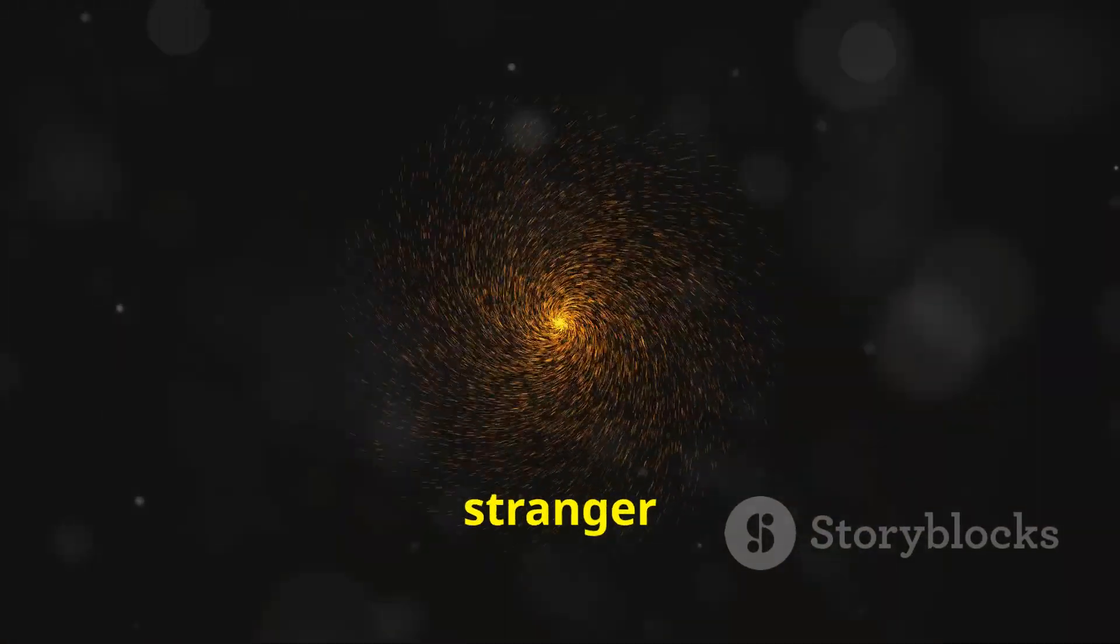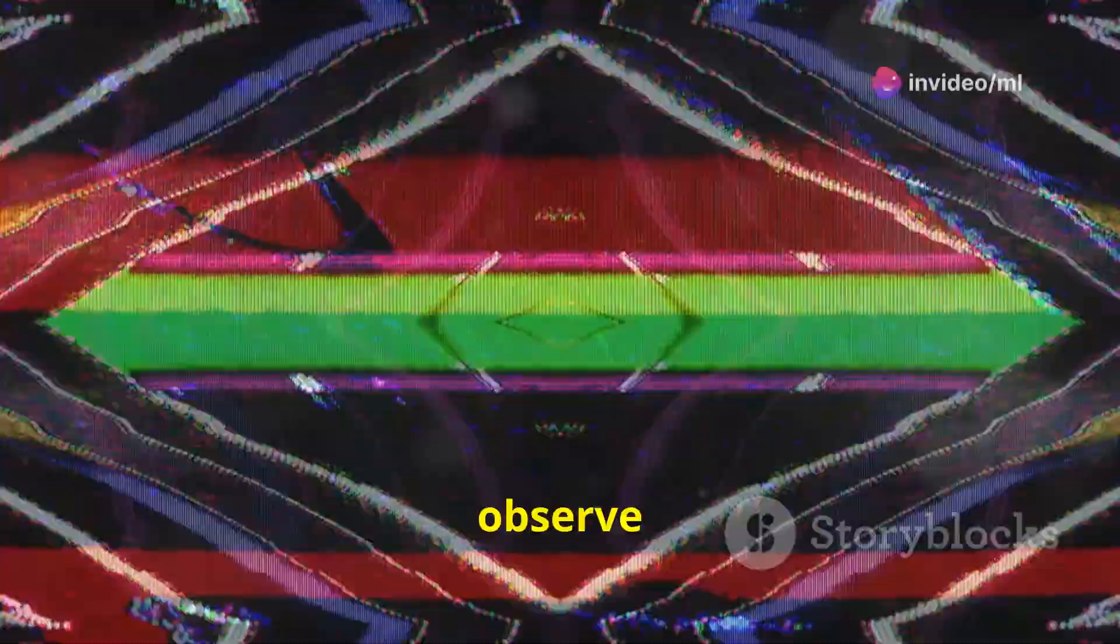Instead, something much stranger occurs. When this experiment is performed, we observe a pattern of bright and dark bands on the screen, known as an interference pattern.